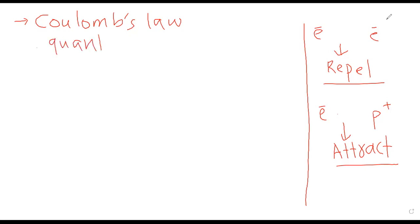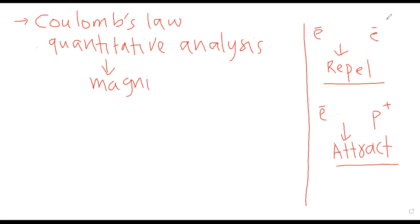So Coulomb's law is used for the quantitative analysis of force. Quantitative analysis means it tells us the magnitude of the force. Remember: Coulomb's law tells us the magnitude of force. The nature of force — whether it will be attractive or repulsive — we already know, but Coulomb's law tells us the magnitude of that force: how much attractive force there will be and how much the magnitude of repulsive force will be.